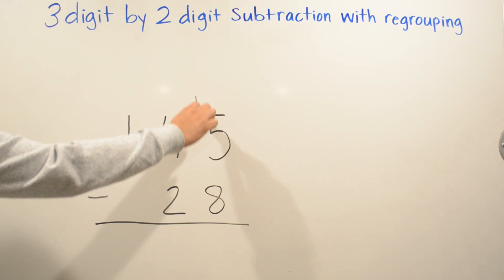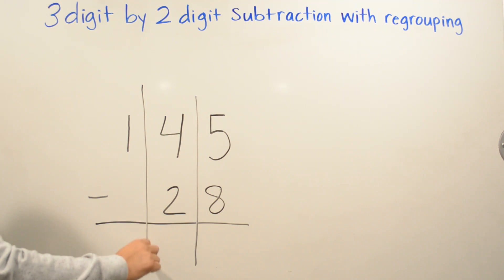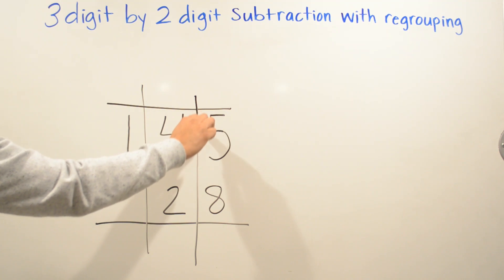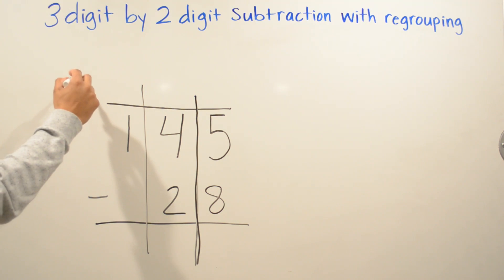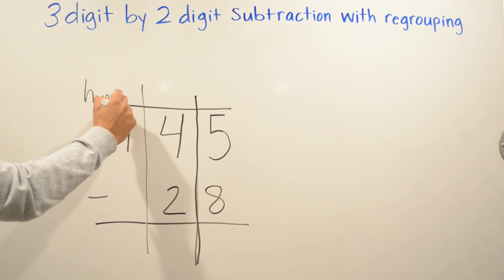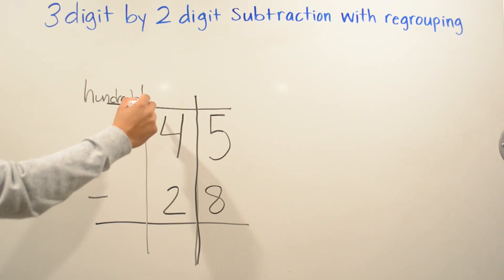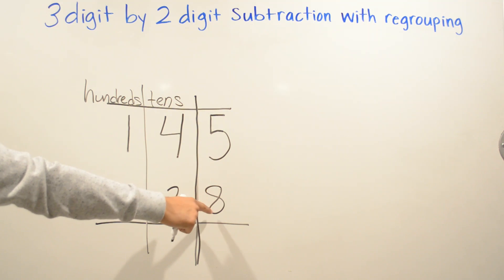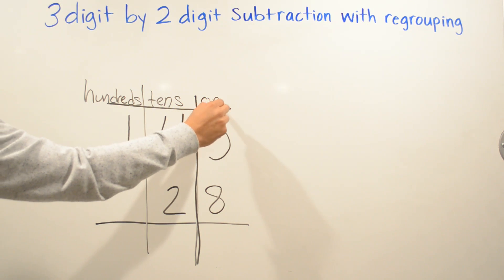I'm going to draw the lines to separate — and don't get confused — with your hundreds, tens, and ones. So the one is going to be in your hundreds place, your four and your two is in your tens place, and your five and your eight is going to be in your ones place.